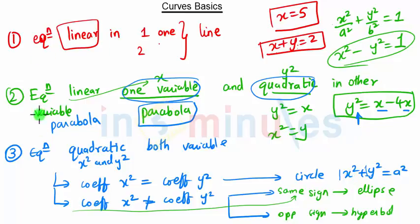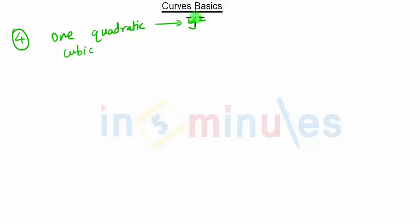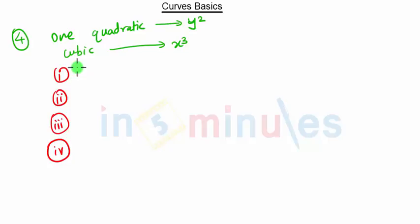So to summarize: both linear → line; one linear, one quadratic → parabola; both quadratic → circle, ellipse, or hyperbola. The fourth rule: one variable is quadratic and the other is cubic. For example, if the equation is quadratic in y and cubic in x — like y² = x³ — we apply four sub-rules.